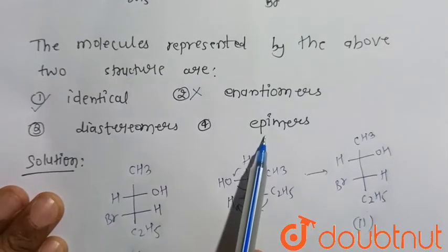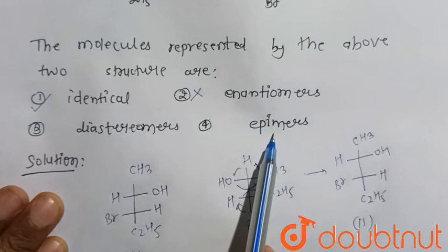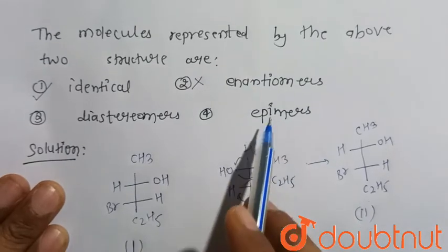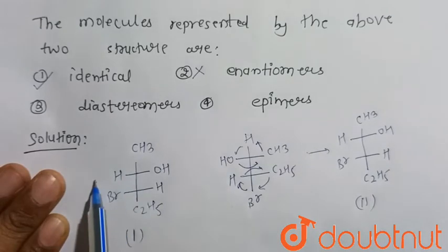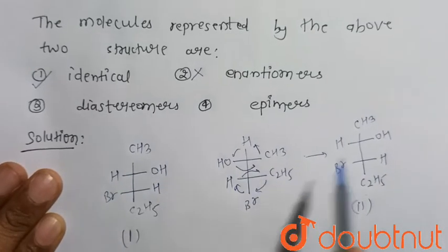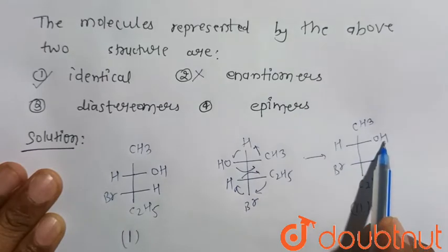They are also not epimers because epimers have different configuration at one carbon, at least one carbon. Here we can clearly see that H is present at the left hand side and OH present in the right hand side. Here also H is present in the left hand side and OH present in the right hand side.